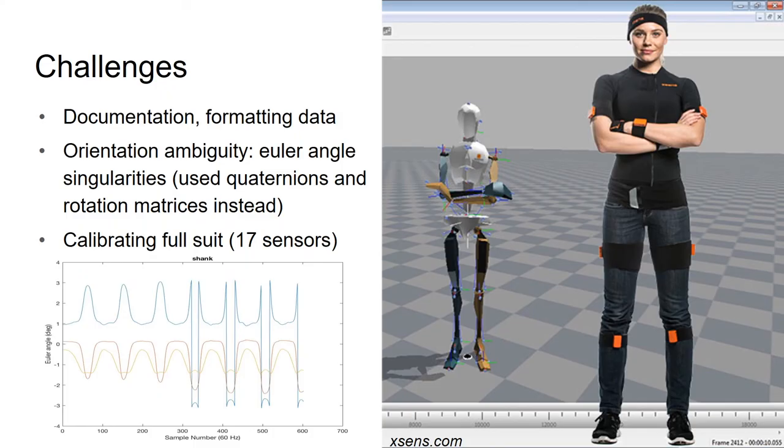Most of the challenges we faced were with the limited documentation of the XSens model and the formatting of the exported data. Additionally, we started with the use of Euler angles to describe the rotations, but were faced with kinematic singularities and had to switch to quaternions and rotation matrices instead. In order to use the XSens biomechanical model, you must go through the entire 17 sensor full body suit calibration.